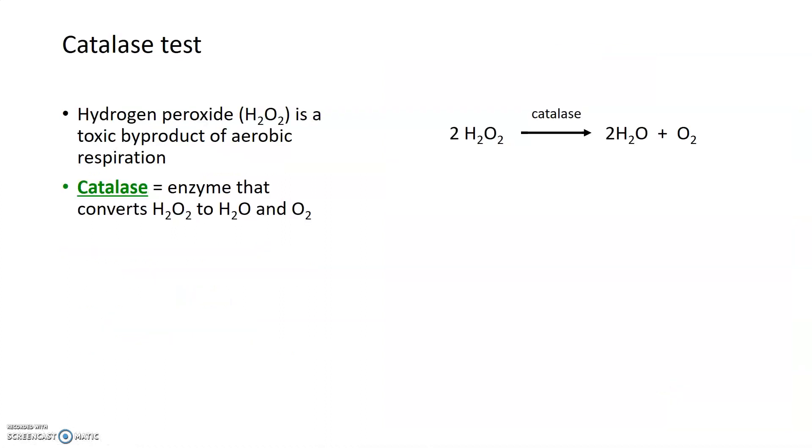The first biochemical test that we're going to talk about today is the catalase test. Catalase is an enzyme that converts hydrogen peroxide, or H2O2, into water and oxygen gas. This test is used to determine whether a bacteria produces this enzyme catalase.